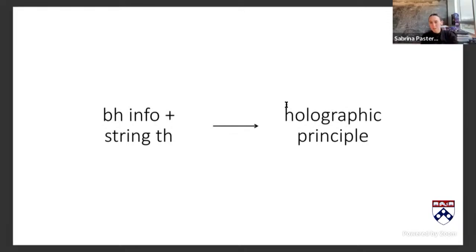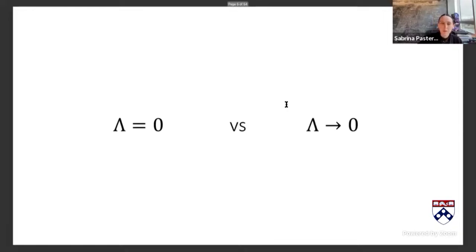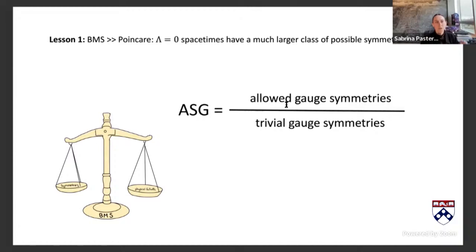The key distinction is that we're trying to look at strictly lambda equals zero spacetime. Things can be subtle in that flat limit, but one positive feature is that we get a much larger symmetry group. The first lesson that kicked off this attempt at flat holography comes from the fact that there's the BMS group — Bondi, van der Burg, Metzner, and Sachs — which is much larger than the Poincaré group and is the natural asymptotic symmetry group for asymptotically flat spacetime.